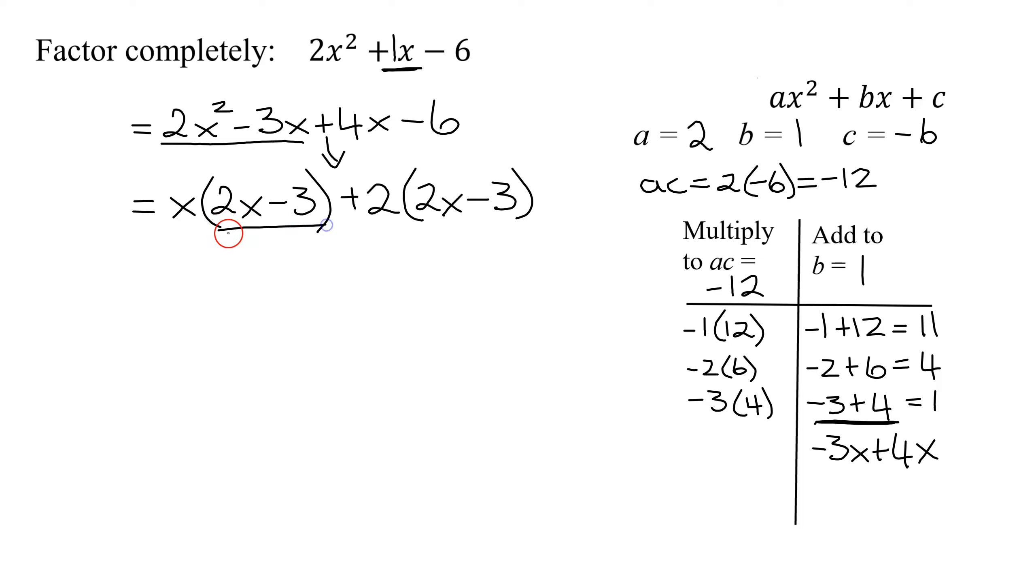Now, is this binomial the same as this one? Yes, that's your common binomial factor that you bring in front. So I factor out my binomial 2x minus 3. And what does it leave behind in the second binomial?